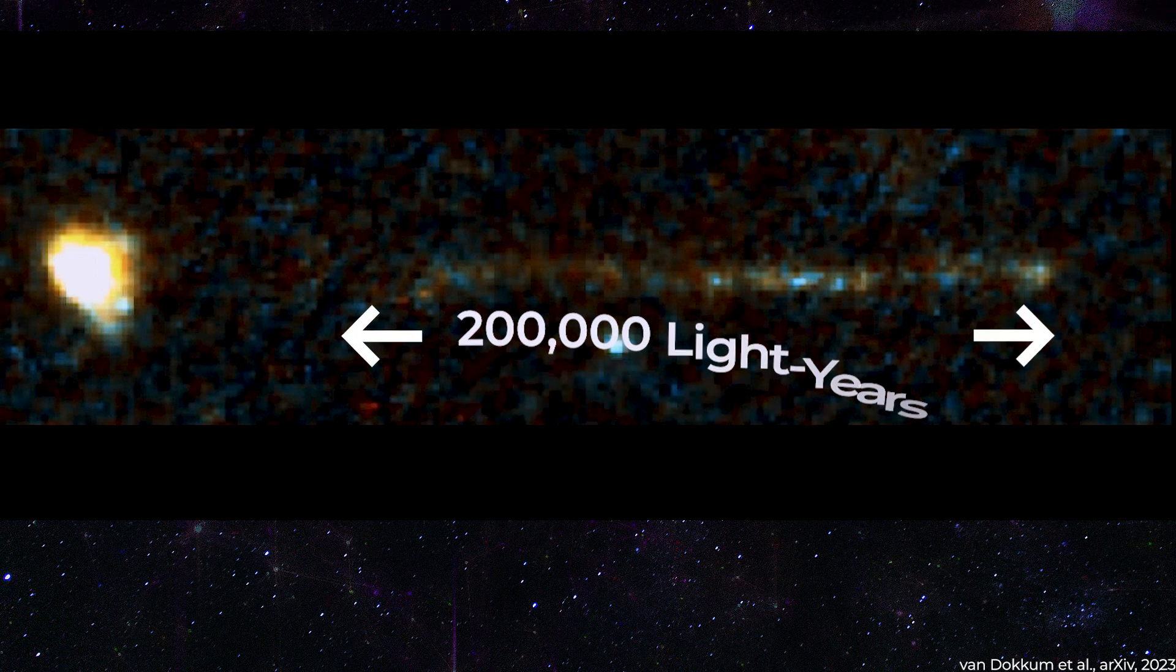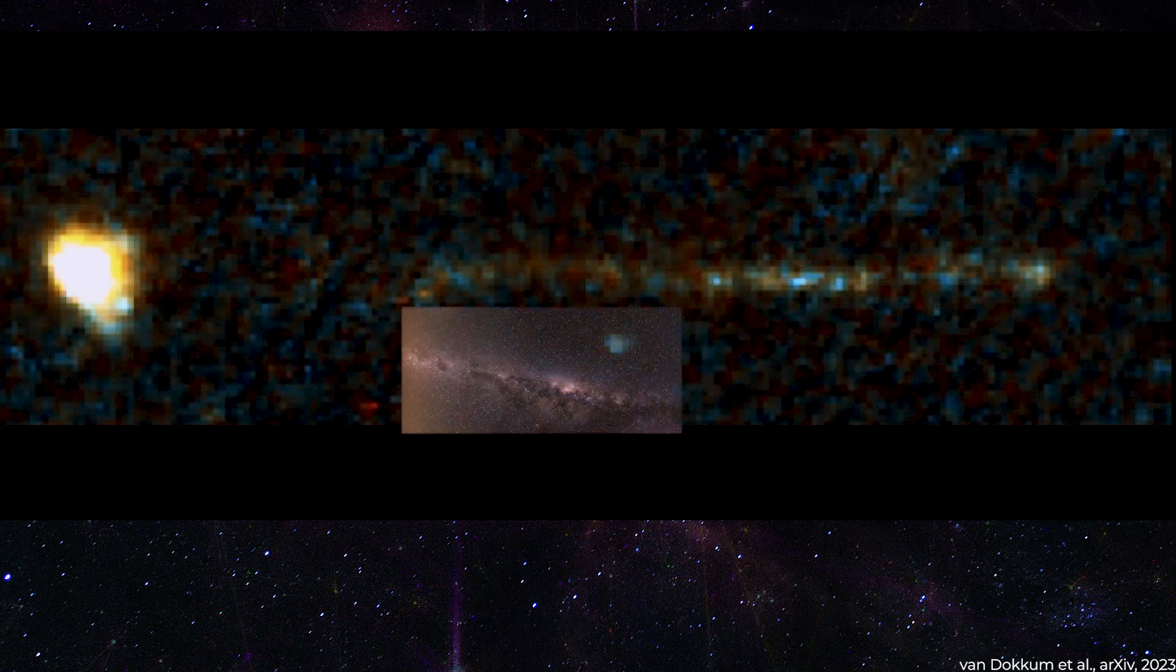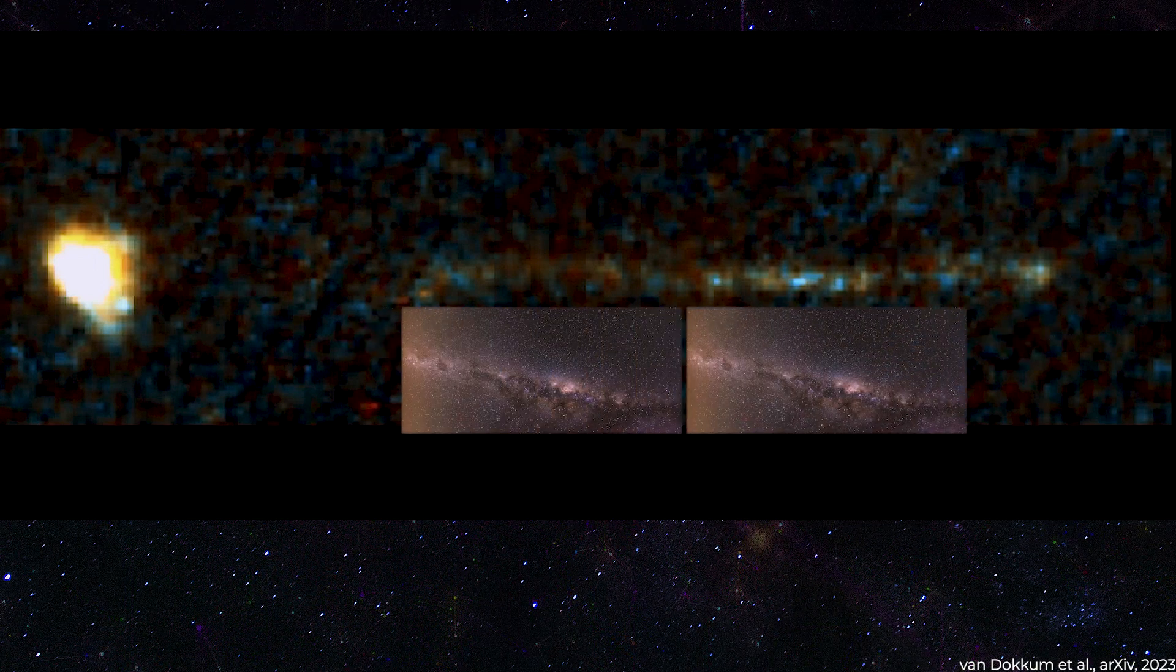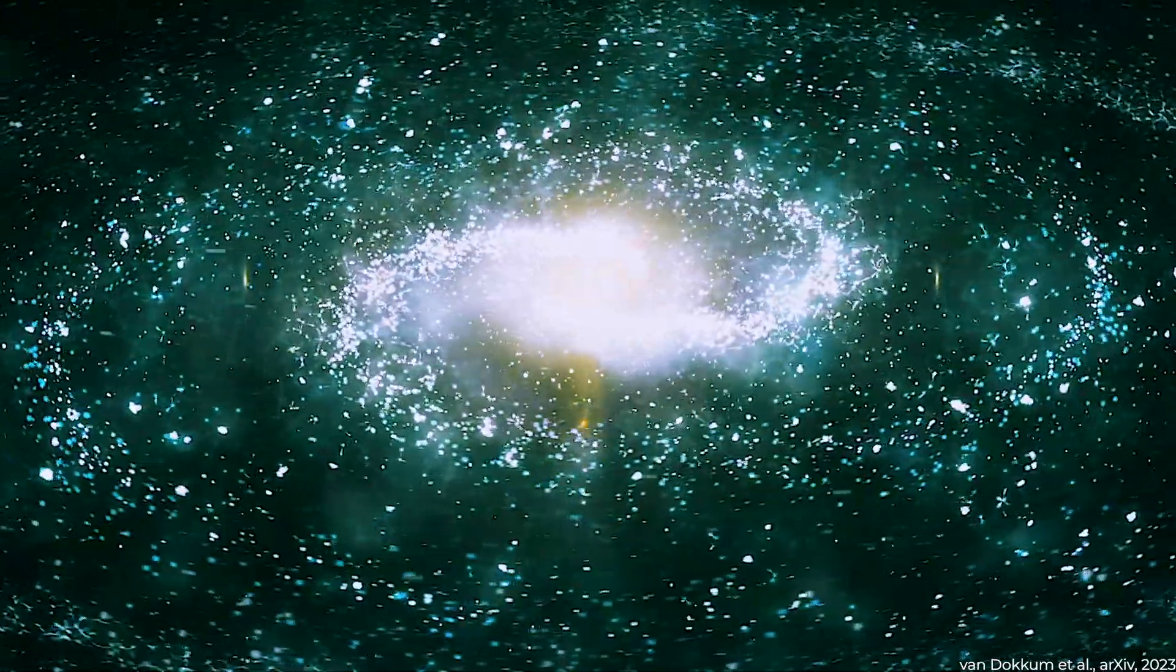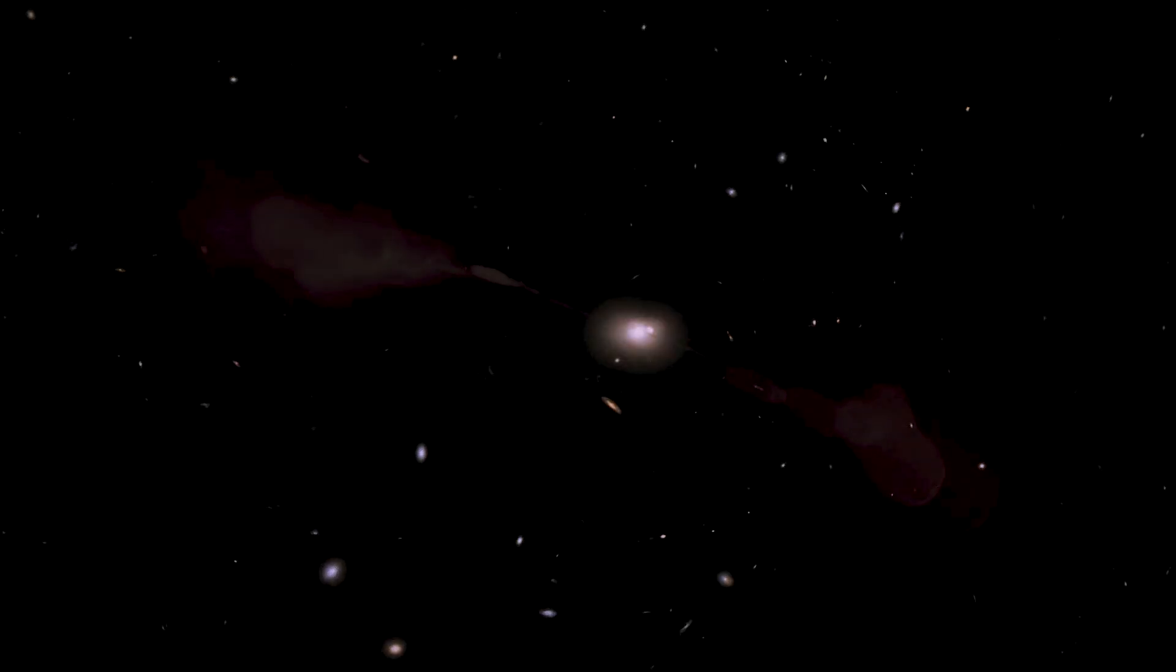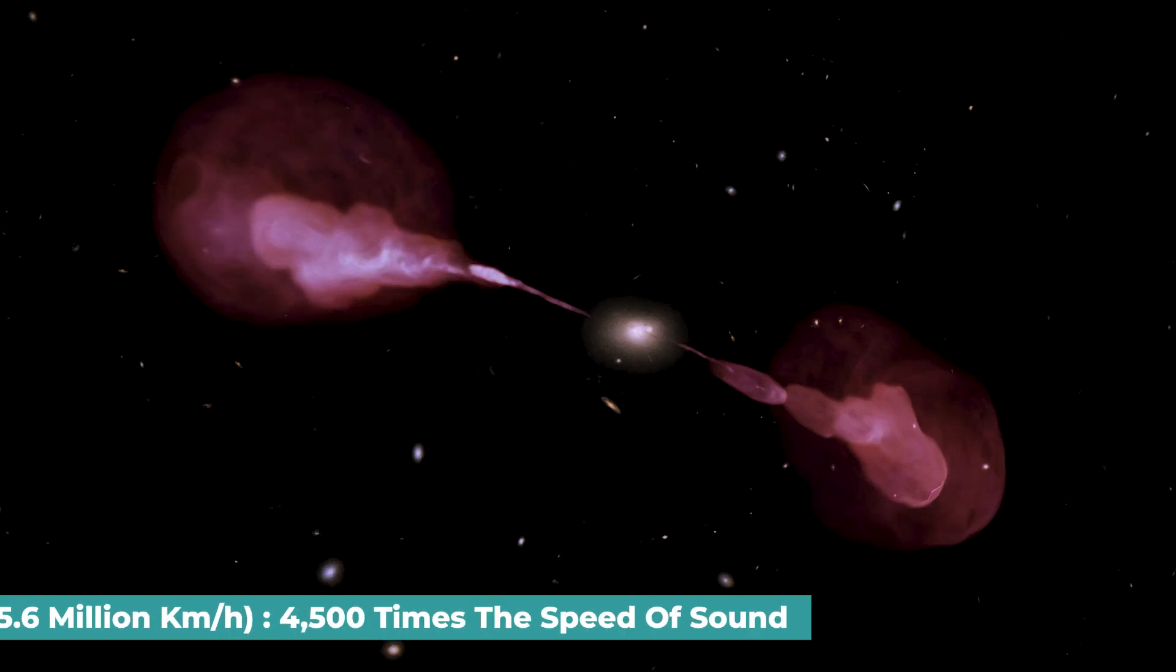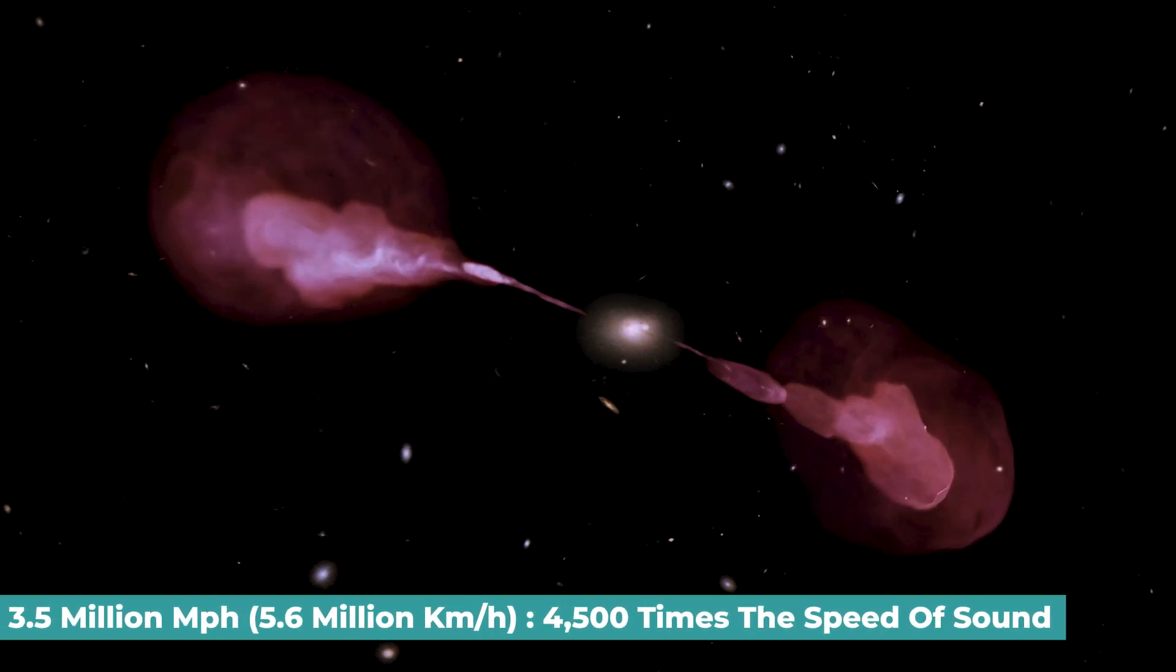Further research indicates that the streak is more prolonged than 200,000 light-years, or about twice the diameter of the Milky Way, and is likely composed of compressed gas actively creating stars. The gas is being propelled out from its home galaxy at a rate of 3.5 million miles per hour.